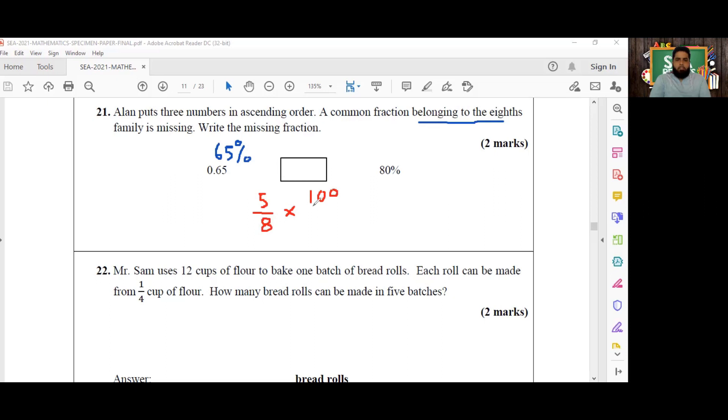Now we can start testing from five eighths. So we just multiply five eighths by 100 over one. Four can go into eight twice and four can go into 100 twenty-five times. So that's going to give me 125 over 2, and this can be converted into a mixed number. That is going to give me 62 and a half percent, or 62.5%, which is less than 65%.